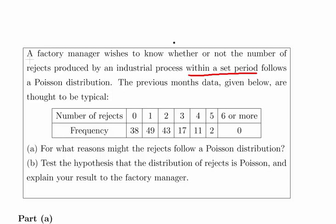The previous month's data given below are thought to be typical. This is the number of rejects and the frequency of shifts where that number of rejects occurred. For example, there were 38 shifts where there were 0 rejects, 49 shifts with 1 reject, 43 shifts with 2 rejects, and so on: 17, 11, 2.